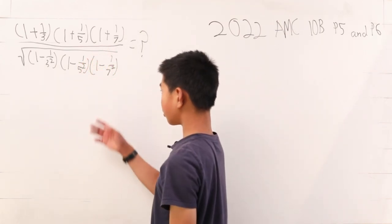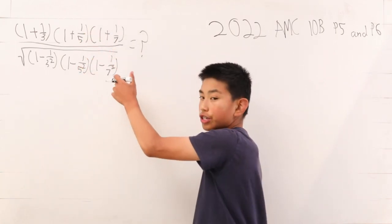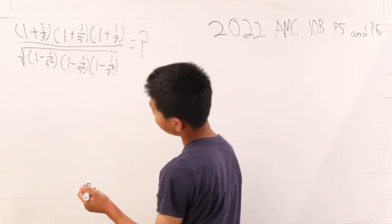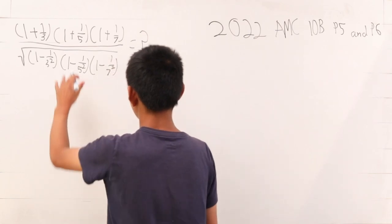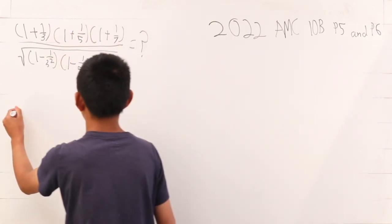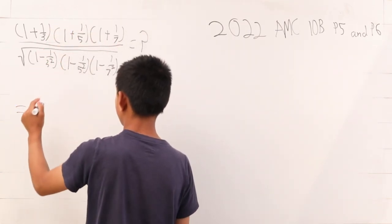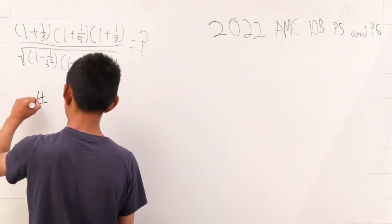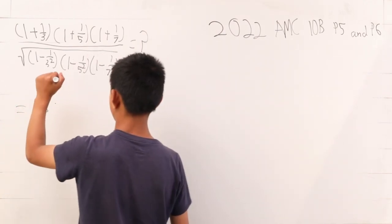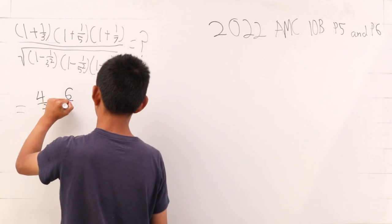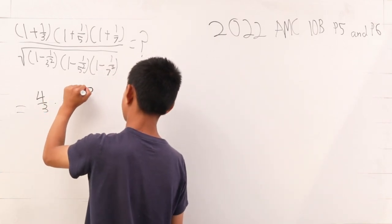We clearly see a connection here, so we can probably divide it. First, we can just add all these and subtract all these out. On the top, we get 4/3 times 6/5 times 8/7.